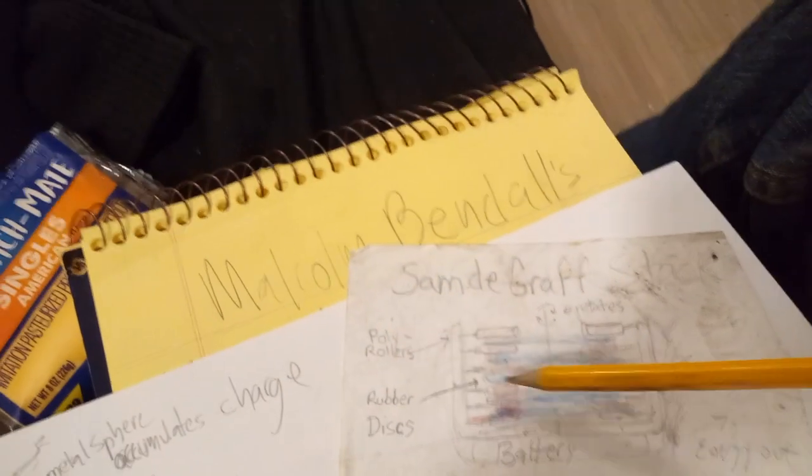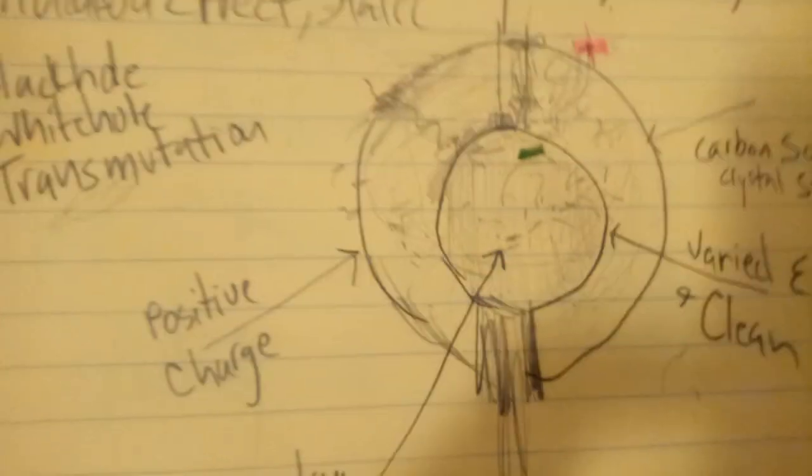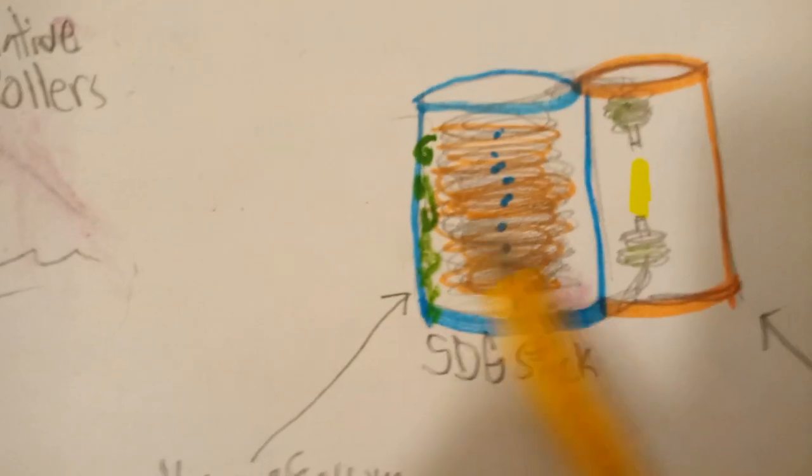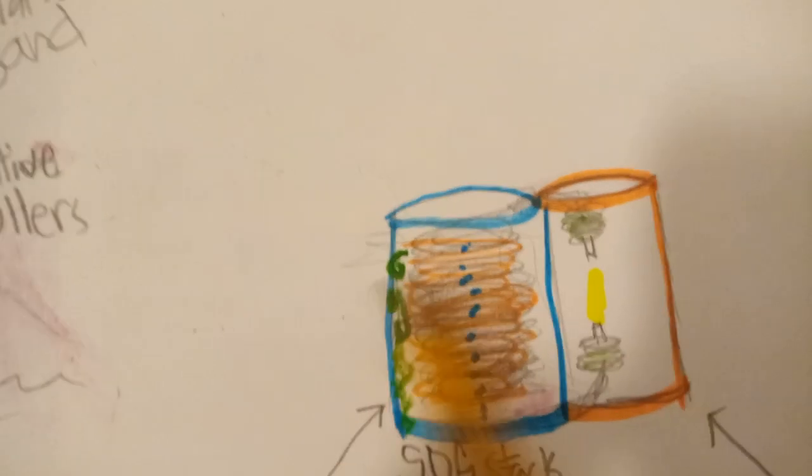So this stacked Van de Graaff, I think, could produce a lot bigger charge than even a large thunderstorm generator. What you could do is put a stack, a Sam de Graaff stack, inside a pressurized compartment. You could do an ultra vacuum in here.